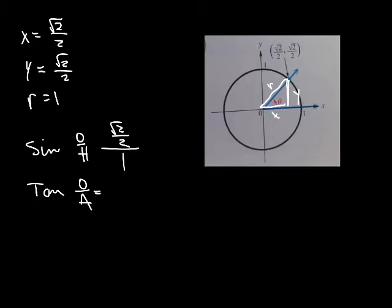And then my tangent is going to be opposite over adjacent, which is y over x, square root of 2 over 2 over square root of 2 over 2. Invert and multiply. Cancel, cancel, cancel, cancel. So I get 1 for the tangent of that. And you just keep going.